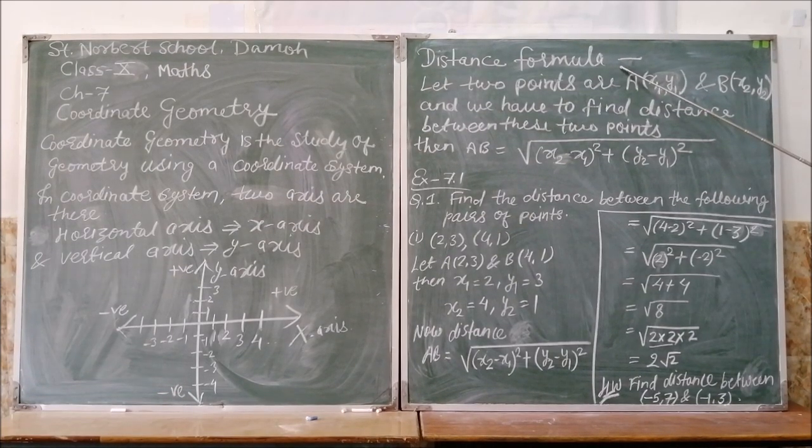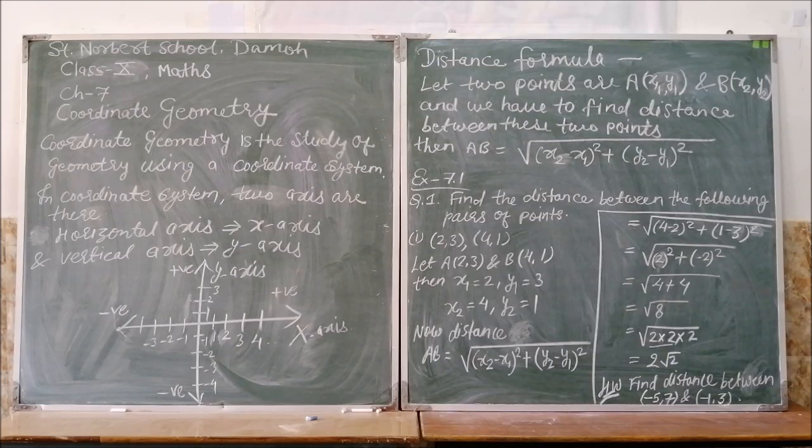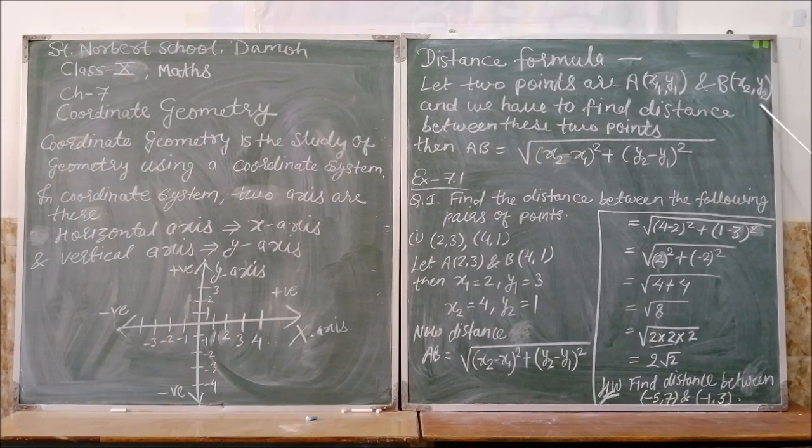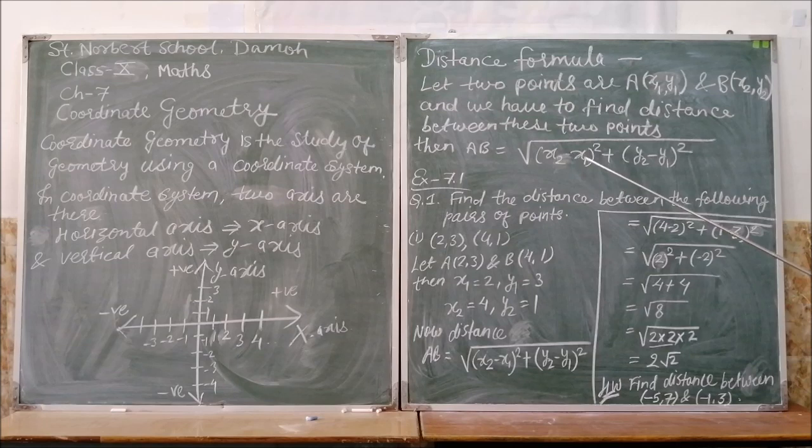To solve Exercise 7.1, we will use the distance formula. So to know the distance formula, first of all let two points be A(x1, y1) as its coordinate and B(x2, y2) as its coordinate. And we have to find distance between these two points. Then distance formula says AB equals under root (x2 minus x1) square plus (y2 minus y1) square.